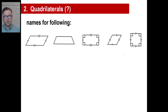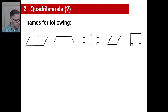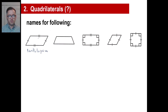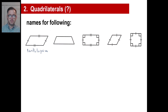The last section covers quadrilaterals — simply a four-sided figure. This is called a parallelogram, which is a quadrilateral where the opposite sides are parallel to each other. A trapezoid has only one pair of sides that are parallel to each other. A parallelogram has two sets of parallel sides.